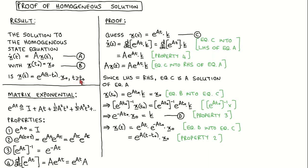The proof for the solution relies heavily on the properties of the matrix exponential. Let's first look at the matrix exponential before working through the proof. We previously defined the matrix exponential function of square matrix A times t as the infinite series shown here. Remember that it is a matrix with the same dimension as A and that it is not the same as applying the scalar exponential function to each element of At. We list four properties of the matrix exponential function here, which can easily be proven by using the matrix exponential definition.